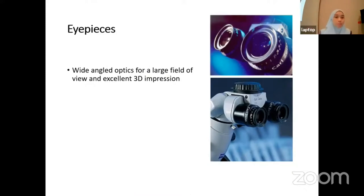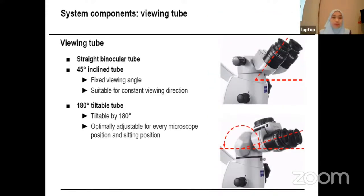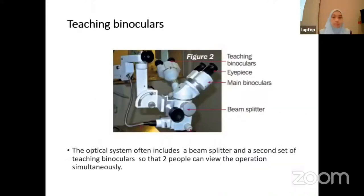The eyepiece provides wide-angle optics for a large field of view and excellent 3D impression. For the viewing tube, we have a straight binocular tube or 45-degree inclined tube with a fixed viewing angle, suitable for a constant viewing direction. We also have a 180-degree tiltable tube, which can be adjusted to get the optimal position. Most microscopes currently also have teaching binoculars, which include a beam splitter and a second set of binoculars so that two people can view the operation simultaneously — very useful for the assistant or a supervising teacher.